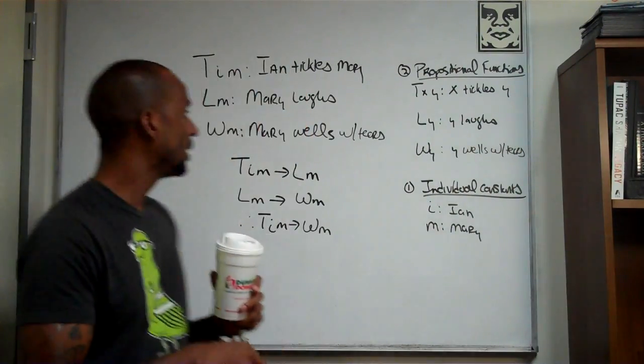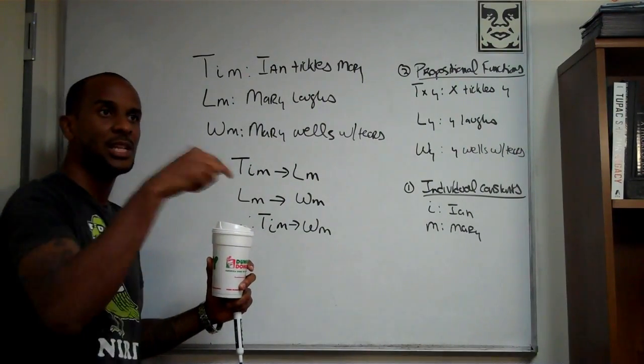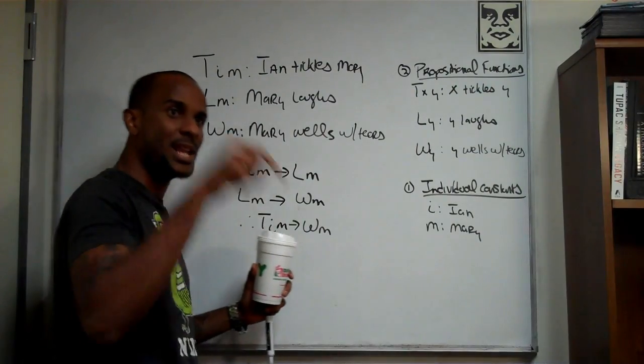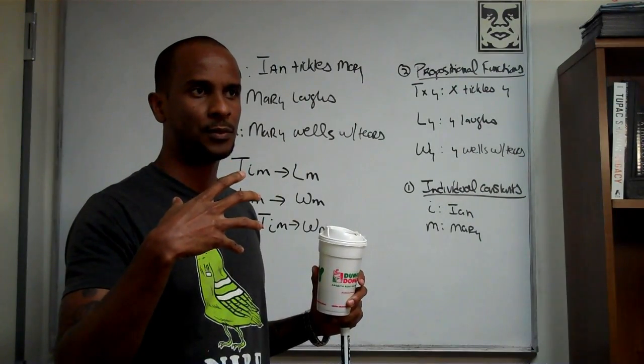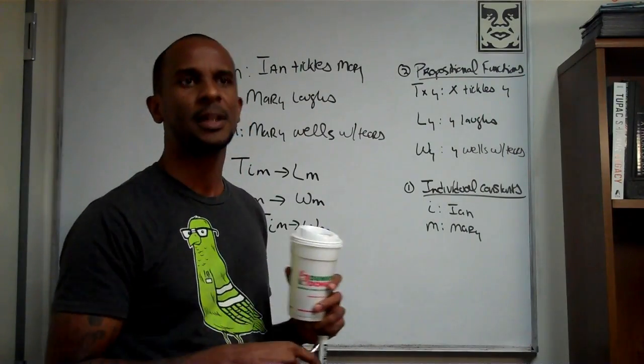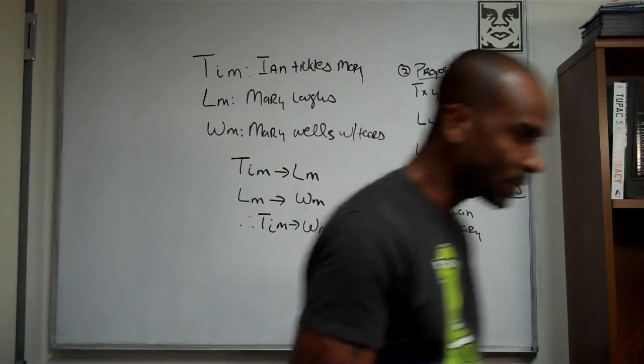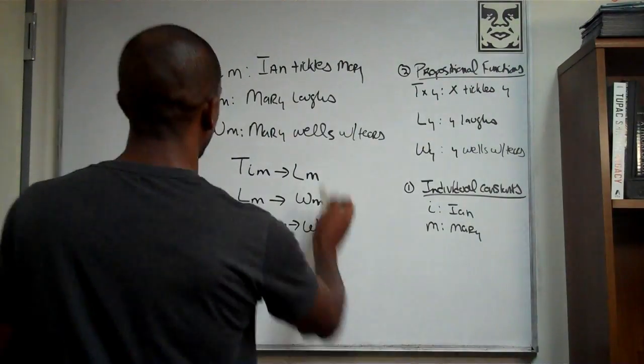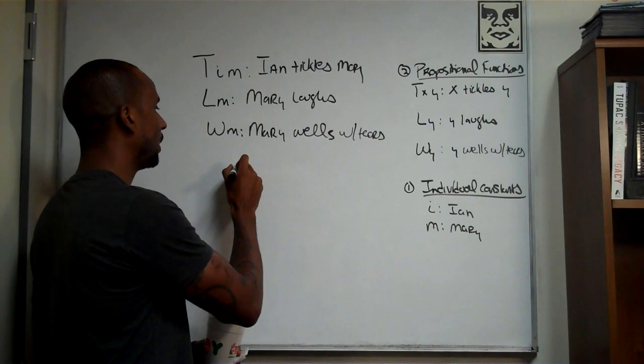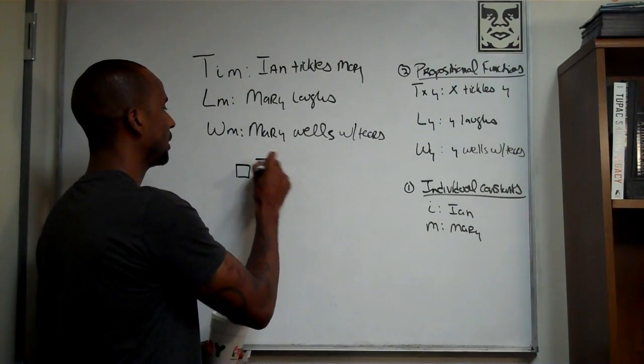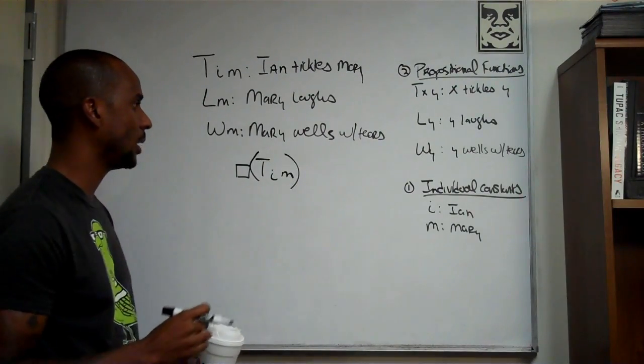So, it seems to be the case that you could create a condition in which it was necessary for Ian to tickle Mary. So, I create a condition in which Ian has to tickle Mary, in a sense. It is now necessary, Ian, that you tickle Mary. And you can imagine that this, conceptually, would be a consequence of an order that might be given. Ian, I want you to tickle Mary. If you can imagine. So, it should be the case, then, that we could talk about the necessity of Ian tickling Mary. It is necessary that Ian tickles Mary.